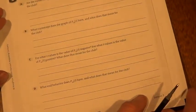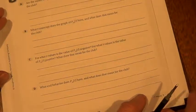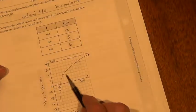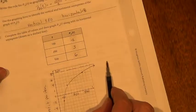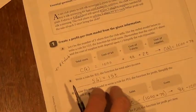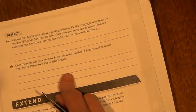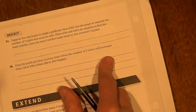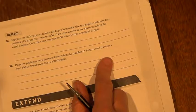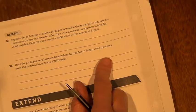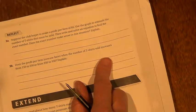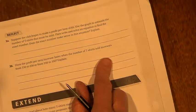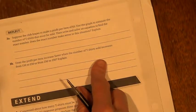What end-behavior does profit per item have? And what does that mean for the club? What does this mean for the club that it will not go above 8? What does that mean for the profit per item? And now we get into a little more reflection.